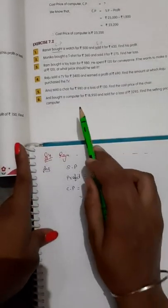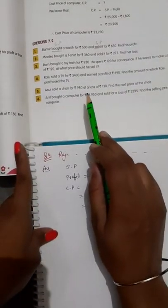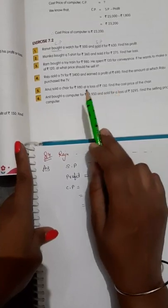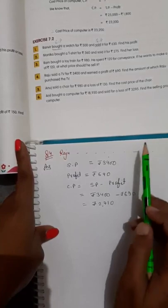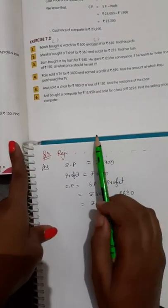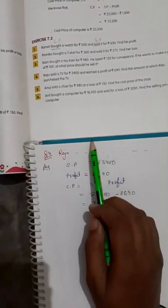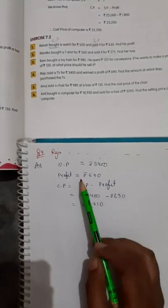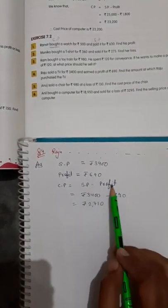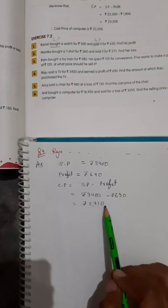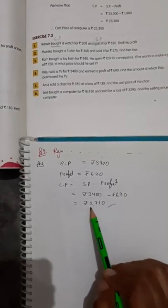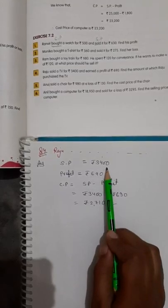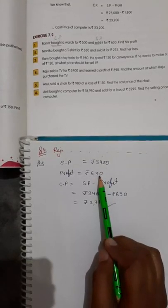Question number four: Raju sold a TV for 3400 rupees and earned a profit. SP and profit are given; we need to find the cost price — the amount at which he purchased the TV. Using the CP formula in the case of profit, you get 2710 rupees. That is the price at which Raju had purchased the TV before selling it for 3400.